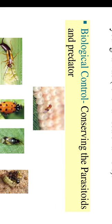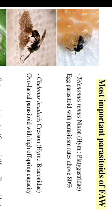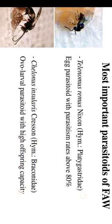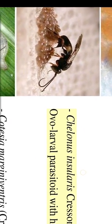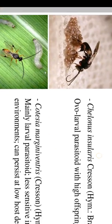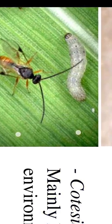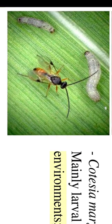Biological control: conserve parasitoids and predators. Most important parasitoids of FAW include: Telenomus remus Nixon (Hymenoptera: Platygastridae) — egg parasitoid with parasitism rates above 80%; Chelonus insularis Cresson (Hymenoptera: Braconidae) — ovo-larval parasitoid with high offspring capacity; Cotesia marginiventris Cresson (Hymenoptera: Braconidae) — larval parasitoid, less sensitive to sprayed environments and can persist at low host densities.